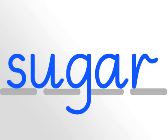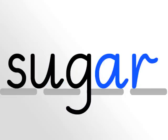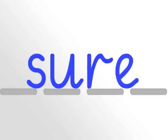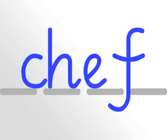Sugar — here the 'sh' sound is represented by the letter 's.' Sh, u, g, r — sugar. Chef — the 'sh' sound is represented by 'ch.' Sh, e, f — chef.